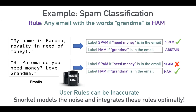What we're essentially doing is converting these common sense rules we have in our heads into heuristics and applying them to all our data. These rules aren't going to be perfect — the word 'need money' might actually appear in an email that's not spam. But if you have enough of these rules and they're more accurate than not, Snorkel can model how noisy these rules are, learn to denoise them, and integrate them in an optimal manner to get training labels for your data.